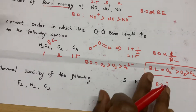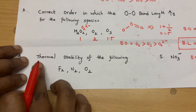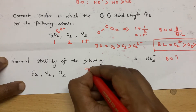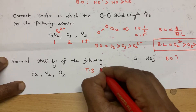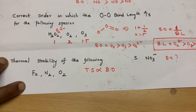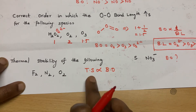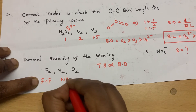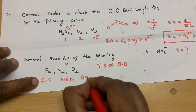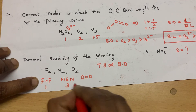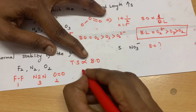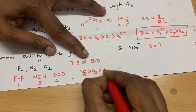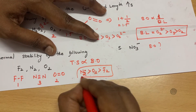More the bond length, the less stable the molecule — it can be broken more easily. For thermal stability of the following species: thermal stability is directly proportional to bond order. F₂ has a bond order of 1, O₂ has a bond order of 2, and N₂ has a triple bond so its bond order is 3. So nitrogen has the highest bond order, then oxygen, then fluorine. This is your thermal stability order: F₂ < O₂ < N₂.